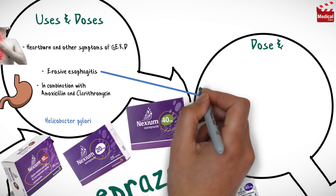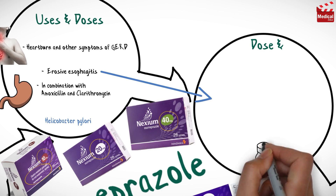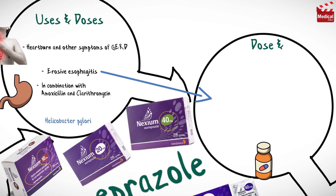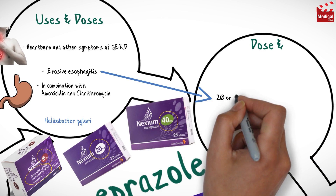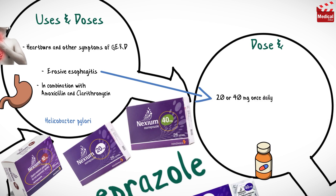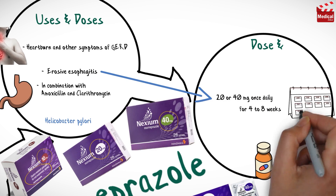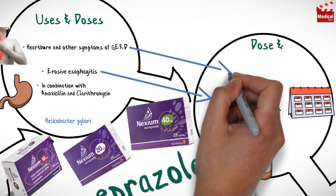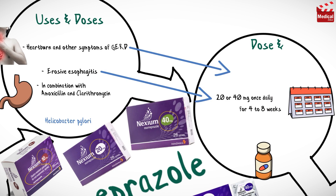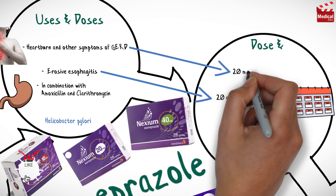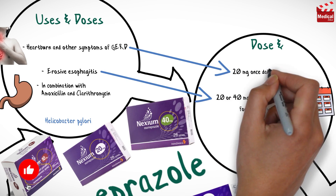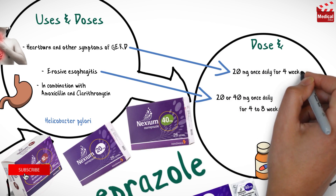The usual dosage for healing of erosive esophagitis for adults is 20 or 40 milligrams once daily for 4 to 8 weeks. For gastroesophageal reflux disease, the usual dose is 20 milligrams once daily for 4 weeks.